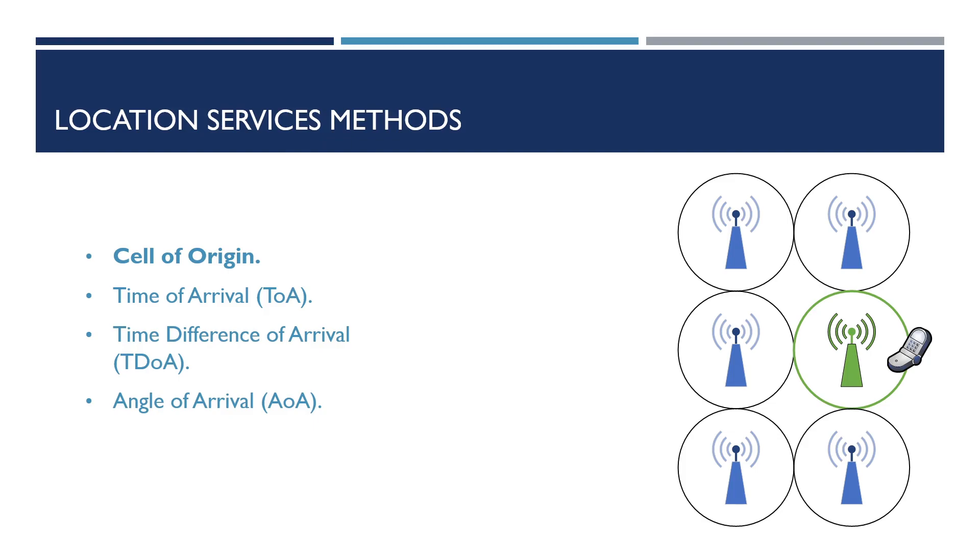First of all we'll take a look at cell of origin. This is the simplest form of location tracking that can be used and tracks the location of an asset by determining its presence within a cell or in simpler terms the AP in which you're connected to. As you can imagine the accuracy of this highly depends on the amount of APs we have in our environment and the density of them.